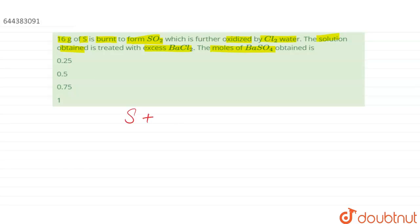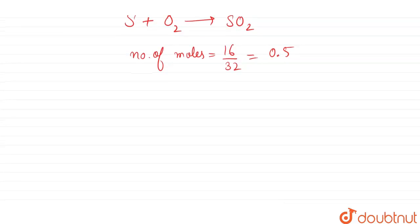Sulfur plus O2 plus H2O forms H2SO4 plus 2H. So can we find out the number of moles? Number of moles will be given mass is 16 by molar mass of sulfur is 32, so it comes out to be 0.5 moles.